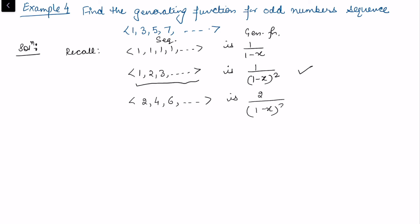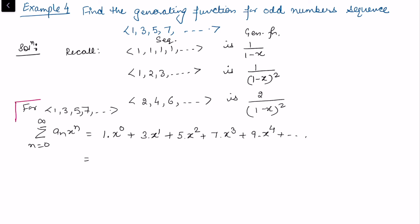For the sequence of odds, let's write the expanded form: 1 times x⁰, 3 times x, 5 times x², 7 times x³, 9 times x⁴, and so on.